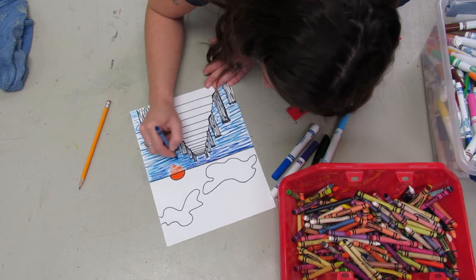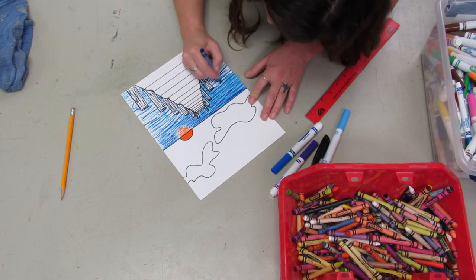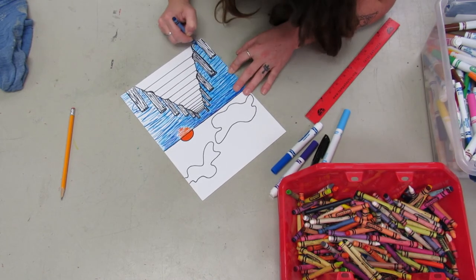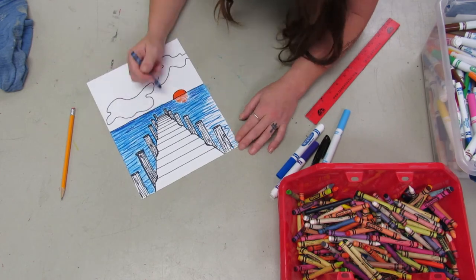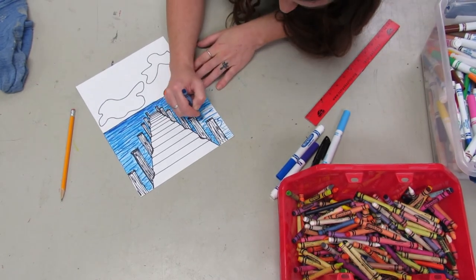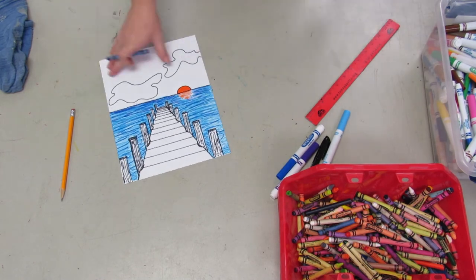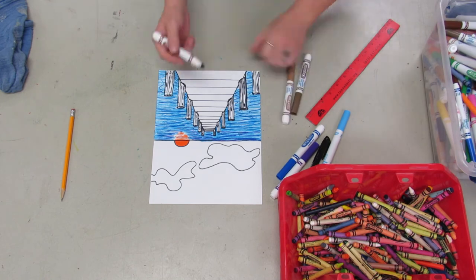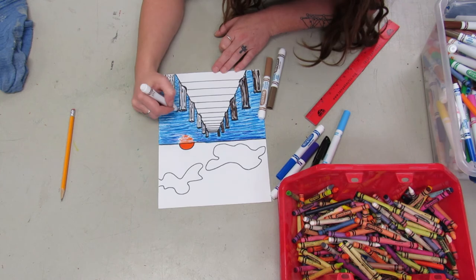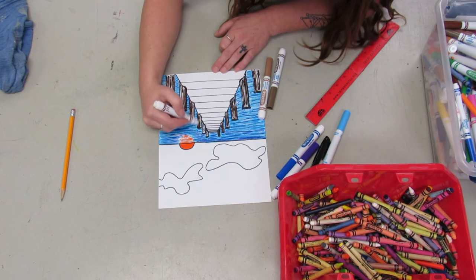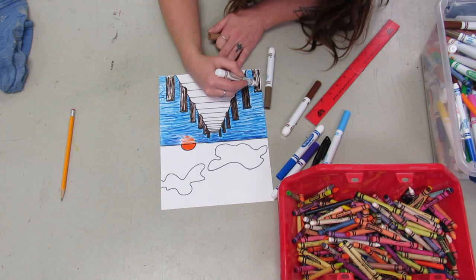Now I'm gonna color my picture. The water I want to make darker towards the horizon line because the ocean gets deeper and deeper the farther you get out, so it looks like it's darker and darker. So I'm gonna make it darker further away from my pier and then make it lighter as it gets closer to the bottom of the paper.